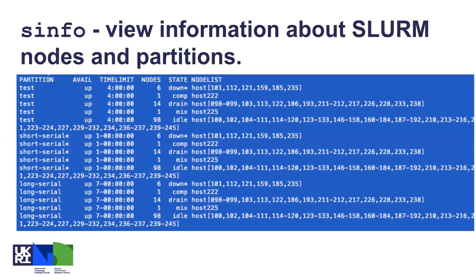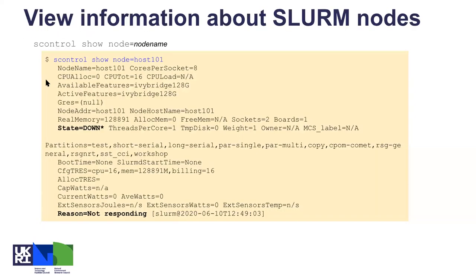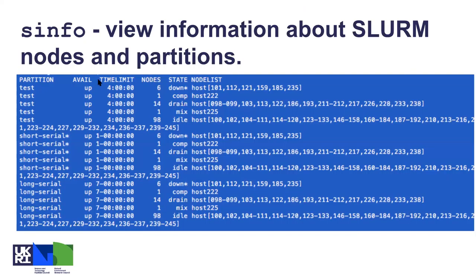A quick example of the sinfo output to view information about nodes and partitions. The heading includes the partition field (the queue name), availability (state of the queue), and the time limit (maximum runtime). For the test queue it's four hours; for other queues it's specified in days - short serial is one day (24 hours), long serial is seven days. Slurm shows queues at a lower level than LSF, displaying different states related to hosts under that queue: idle means the queue can accept jobs, mix can also accept jobs, COMP means jobs are about to complete and can still accept jobs.